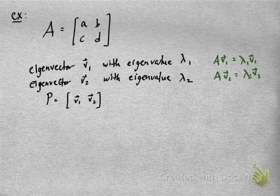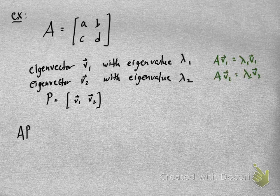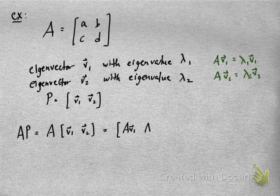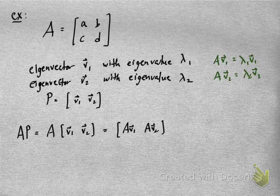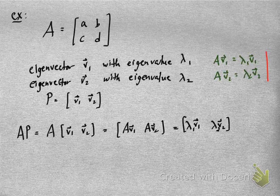I'm going to construct this matrix P whose columns are V1 and V2. Since I'm assuming that V1 and V2 are linearly independent, this matrix P is invertible by the invertible matrix theorem. If I compute A times P, it's A times the matrix whose column vectors are V1 and V2. The first column is going to be A times V1, and the second column is A times V2. From above, we see that that's just lambda 1 times V1, and lambda 2 times V2.